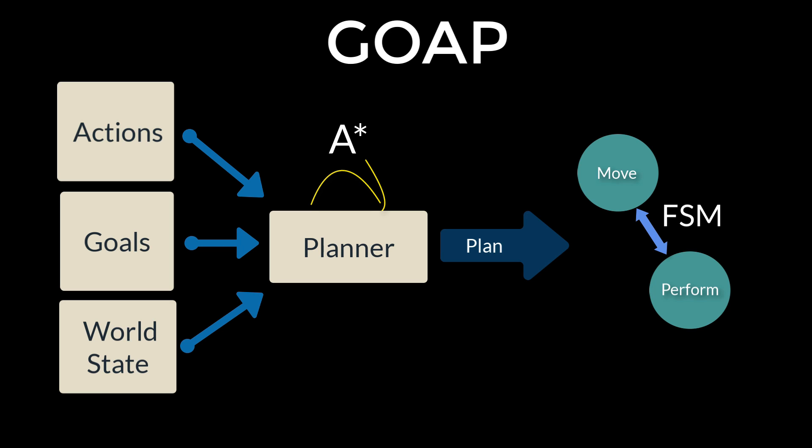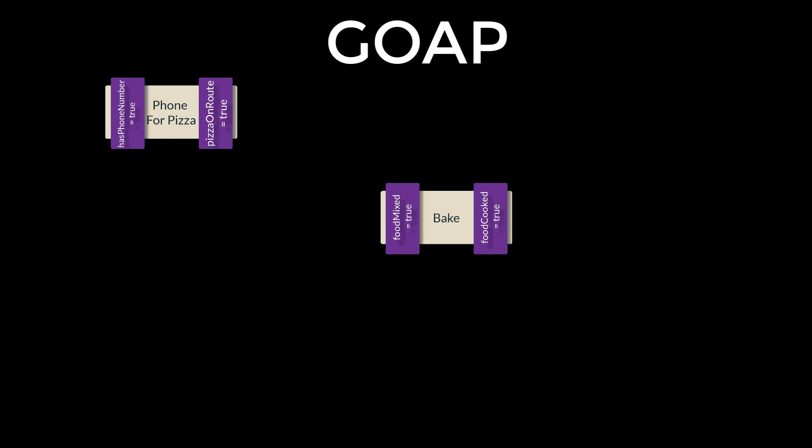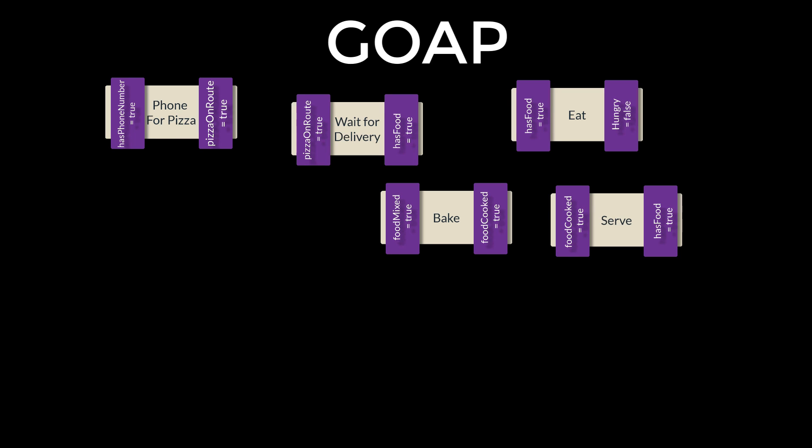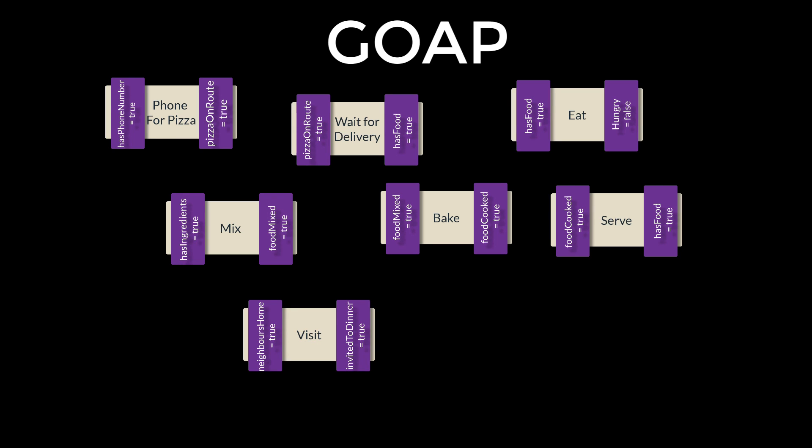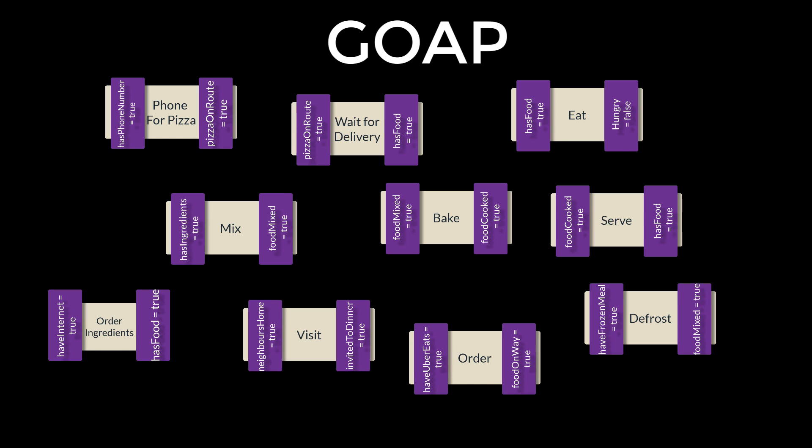Before each action is performed it is always checked to see if it is still valid. If not, the entire plan is discarded and another one is generated. The beauty of GOAP is that more and more actions can be added to the pool available to the agent and these will automatically be picked up by the planner. This means very little extra programming to manage graphs, as the graphs are generated on the fly by the planner. This makes GOAP a very powerful and flexible option for programming the behaviours of your NPCs.